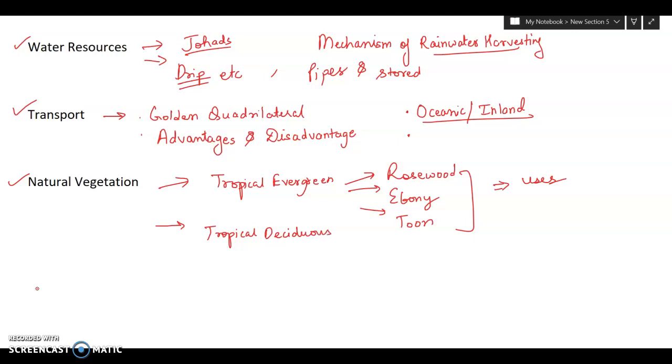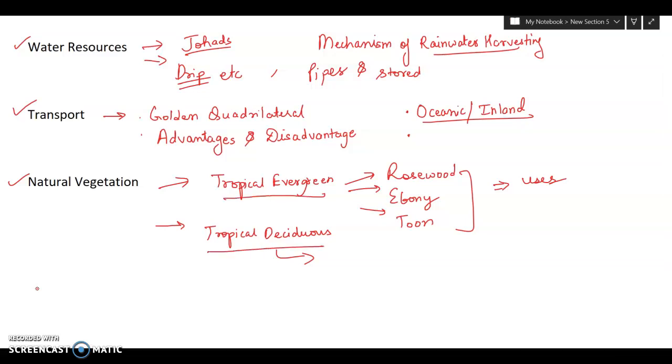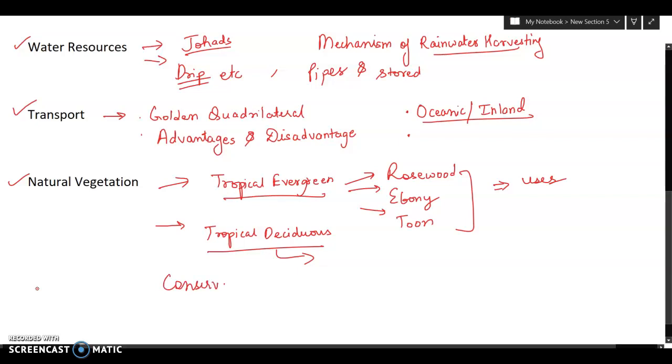And remember to study the climatic conditions also, the distribution as well. Then important species and their uses. They may ask you a difference between tropical evergreen and tropical deciduous. There are other forests like mountain forest, the alpine vegetation, conservation of forests. An important question that may be asked: what are the steps, what are the measures to conserve forest, agroforestry.